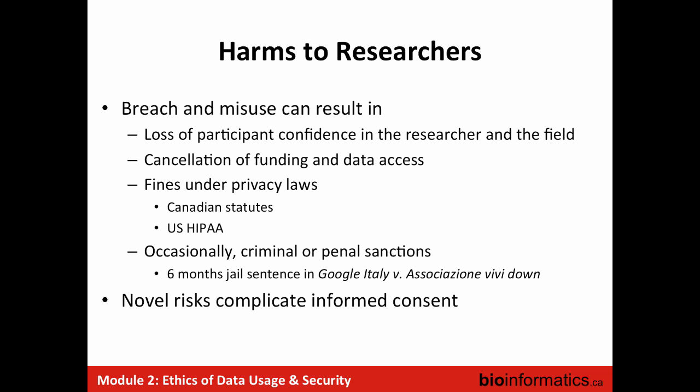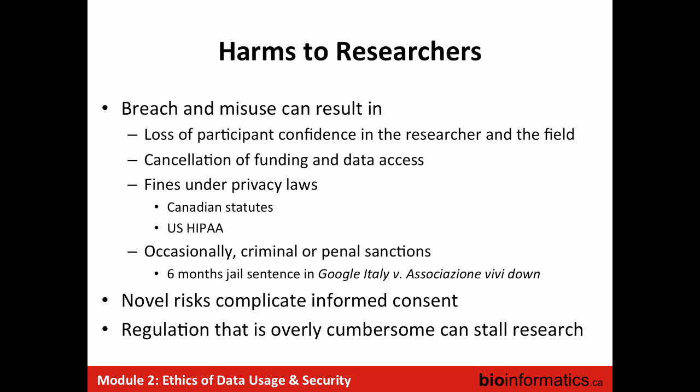Novel risks can complicate informed consent. We've been talking about law enforcement surveillance and Patriot Act surveillance as well as genetic discrimination. The idea of being 'informed' in informed consent is supposed to be very broad — you should have an idea of the risks you're subjecting yourself to. So how do you communicate to people that there's also a chance the NSA might harvest your data? There's a real strain happening in the privacy and policymaking field around these issues. Regulation that becomes overly cumbersome can stall research, and incompatibilities between different jurisdictions or organizations can cause huge delays.